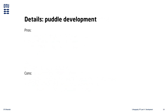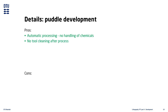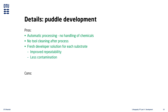While puddle development can be done manually, it is almost always done in an automated tool. Using a dedicated development tool means that there is no chemical handling by the user, which greatly increases handling safety. In automated tools, there is also no cleaning after the process is complete. One of the main benefits of puddle development is that every single development is done with fresh developer solution, meaning the process inherently becomes more stable and repeatable, with much less contamination issues. Automatic processing can also make it easier to do advanced development, since it is just programmed into the development recipe.